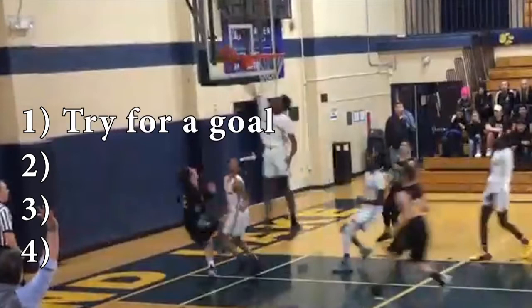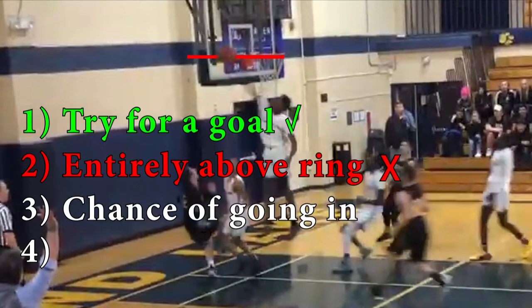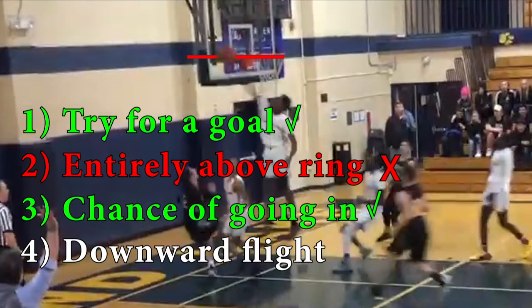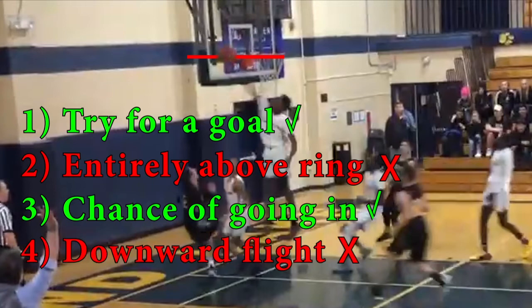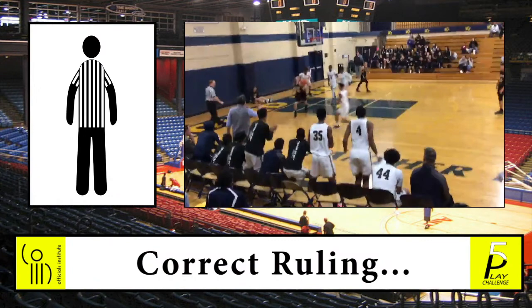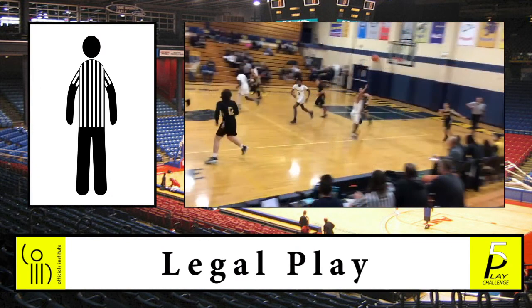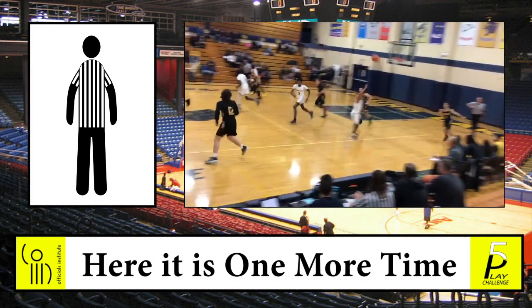Again, using the four factors needed for goaltending — is it a try for goal? Yes. Is it above the ring? Nope. Does it have a chance to go in? Sure. Is it traveling downward? It is not. The official correctly rules this play as a legal play. Go ahead and watch it one last time.